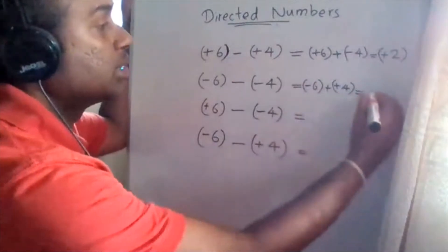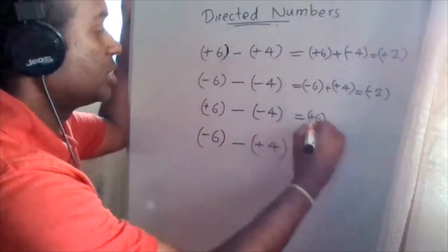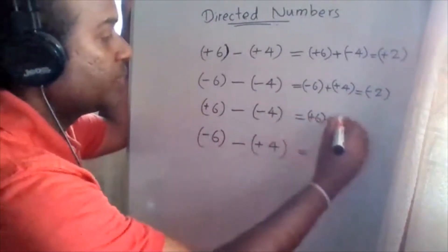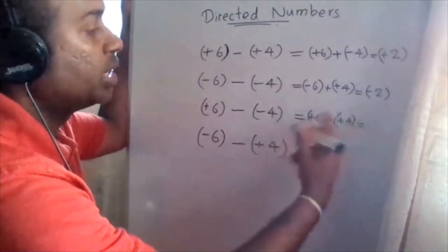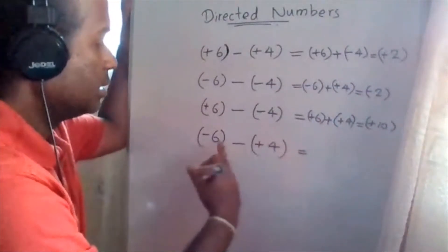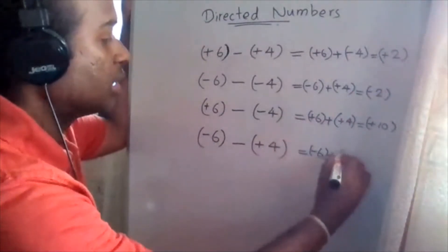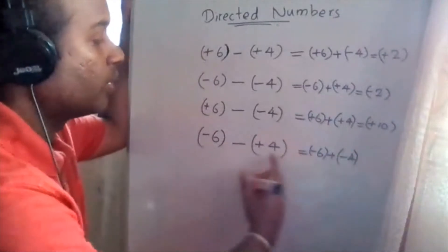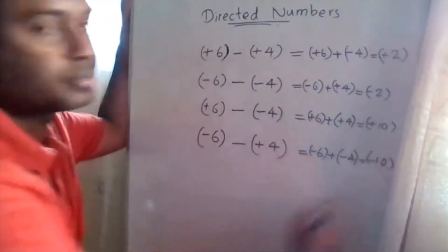The answer is negative two. Here the main operation is subtraction — that should be converted into addition by taking the additive inverse of positive four, which is negative four. Then the answer is negative ten.